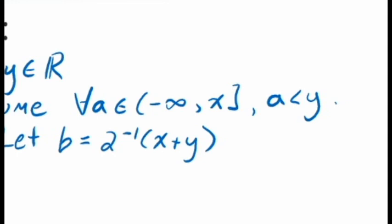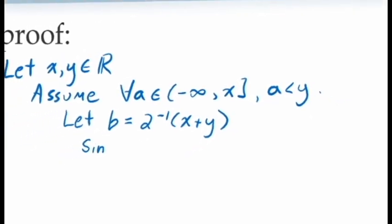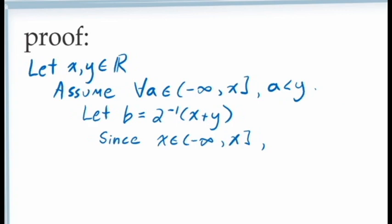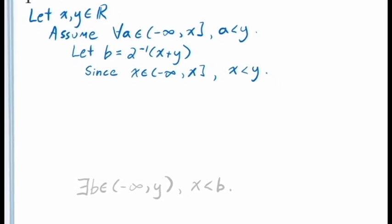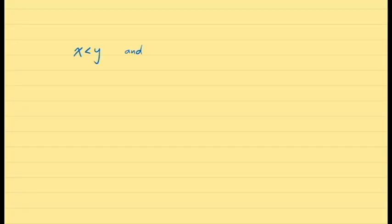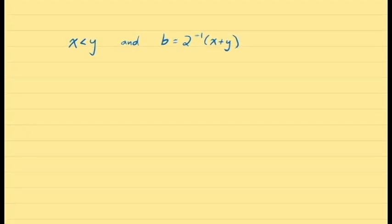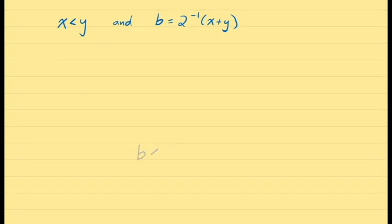To get the information that y is to the right of x, it makes sense to choose a = x, since this is a closed interval which includes x. We can then say: since x is an element in the closed interval from negative infinity to x, our assumption applies, giving us the conclusion x < y. With this information, we need to demonstrate that b = (x + y) / 2 is both less than y and greater than x — in other words, that b lies between x and y.